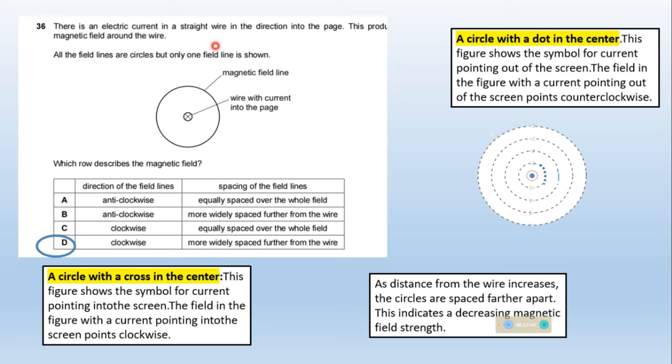There is an electric current in a straight wire in the direction into the page. This produces magnetic field around the wire. All field lines are circles but only one is shown. Which row describes the magnetic field? When you notice a circle with a dot in the center, this shows current pointing out of the screen. A circle with a cross shows current pointing into the screen. The field with a dot points counter clockwise, with a cross points clockwise.